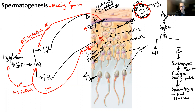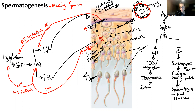Also, the sustentacular cells are going to make inhibin. LH is going to target the interstitial endocrine cells, also called Leydig cells. They make testosterone. Testosterone also hits the spermatocytes. Those spermatocytes go through meiosis to become sperm, which increases sperm count. The spermatocytes need ABP plus testosterone to ramp up production of sperm.